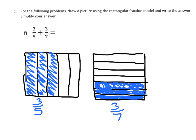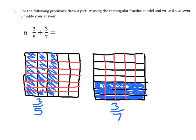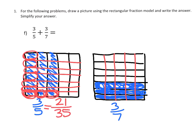Just like we've done before, we're going to take each of the 5ths and cut them into 7ths: 1, 2, 3, 4, 5, 6, 7. And then cut each of the 7ths into 5ths: 1, 2, 3, 4, 5. So instead of 3/5, we now have — counting the array 3 by 7 — that's 21 out of 35, so 21/35. And over here we have an array of 3 by 5, so that's 15/35.